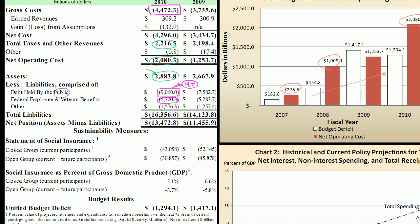If that doesn't scare or depress you enough, go down a few more lines on the statement. Here you'll find the present value of obligations for social insurance — both Social Security and Medicare — things we've promised to pay people in the future. The present value is how much money, given certain assumptions about growth rates, you'd need to set aside today to fund those obligations over the next 75 years.